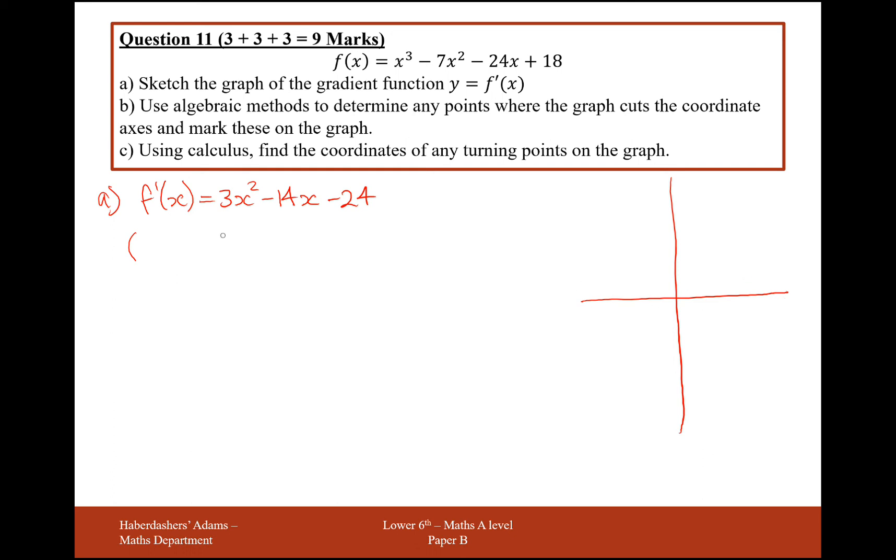We'll just find the intersection points of the x-axis here. I think this factorizes to 3x plus 4. So we're going to have x equals minus 4 thirds and x equals 6.